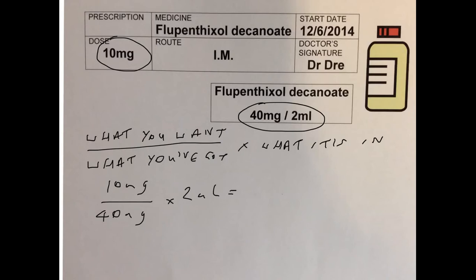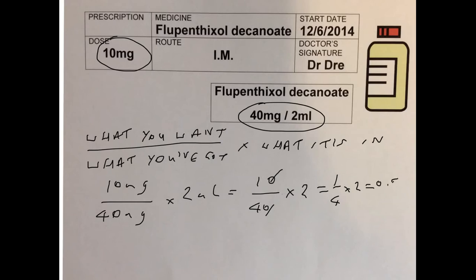So how do we do this calculation if we don't have a calculator handy? 10mg over 40, times 2. We could get rid of the zeros — divide both top and bottom by 10. So that's a quarter times 2, which is 0.5ml.